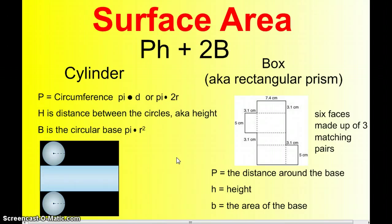On the cylinder, the p stands for the circumference of the circle. And we've talked about the circumference of a circle being the distance around it. That is found by multiplying pi and d. You can also multiply pi by 2 times the radius since two radii make a diameter. h is the distance between the circles, also known as the height. And b is the circular base, which is pi r squared.